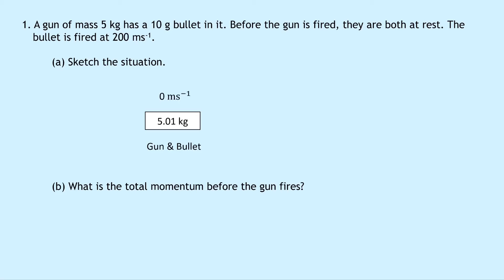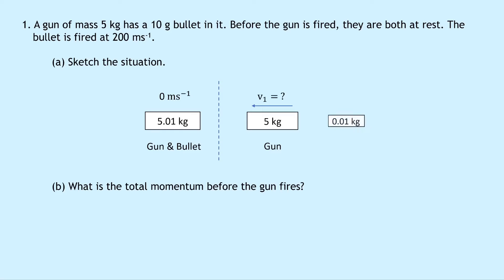The combined system is stationary at 0 meters per second — that's our before situation. After, they explode apart: we end up with the 5 kilogram gun moving to the left at speed v1, and the 0.01 kilogram bullet moving to the right at 200 meters per second. Part b asks: what is the total momentum before the gun fires?